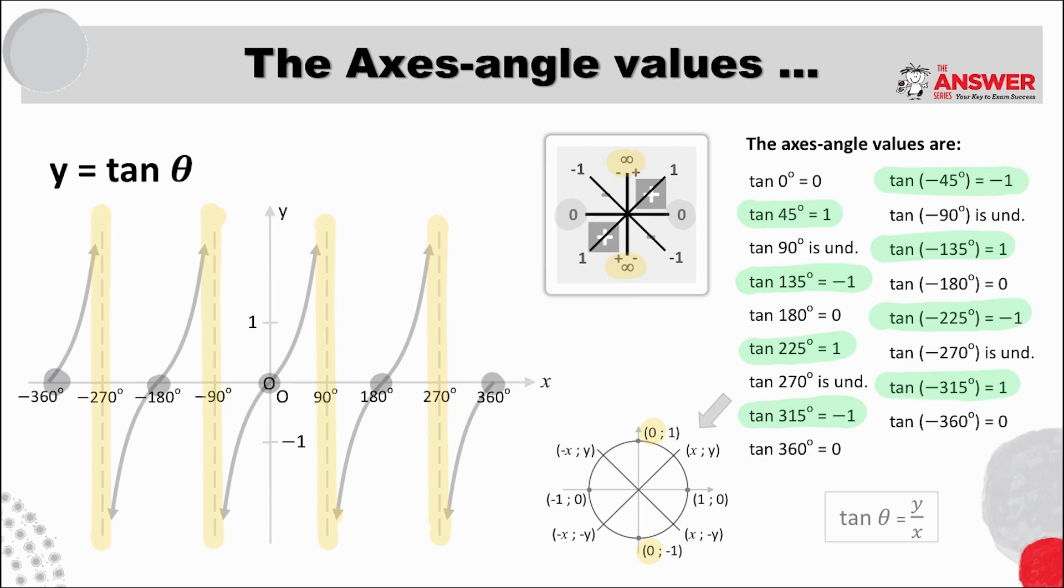I've included the unit circle again here so that you can double-check your ratios without having to go back. So, for example, if we look at the coordinates of 90 degrees, y over x is 1 over 0, which is undefined because the denominator is 0. Therefore, the graph is undefined at 90 degrees, hence the asymptote.